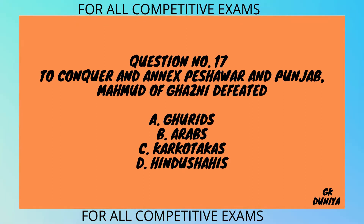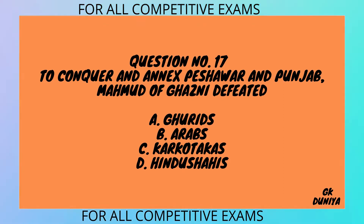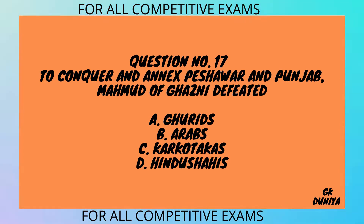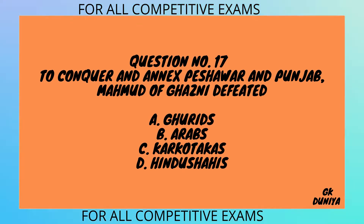Question No. 17. To conquer Kabul's Peshawar and Punjab, Mahmud of Ghazni defeated: A. Ghurids, B. Arabs, C. Karkotakas, D. Hindu Shahis.